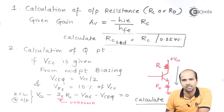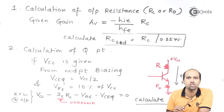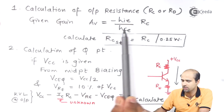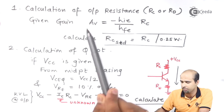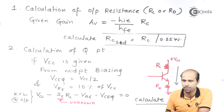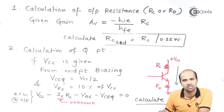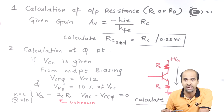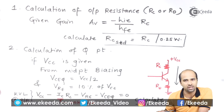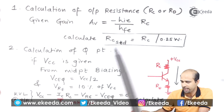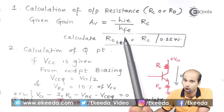First step is calculation of output resistance — that is the collector resistance (RC) in BJT or drain resistance (RD) in FET. Using the BJT gain formula for bypass capacitor, AV equals minus HIE divided by HFE into RC, we can easily get the value of RC since AV will be given. HIE is the design parameter; HFE is the AC value — for BC547A, take 220; for BC547B, take 330. Make sure to use the AC specification for HFE, not DC.